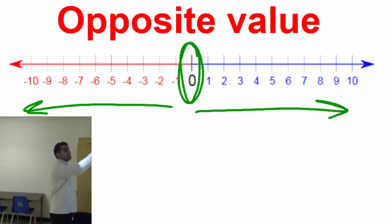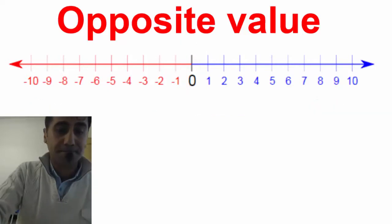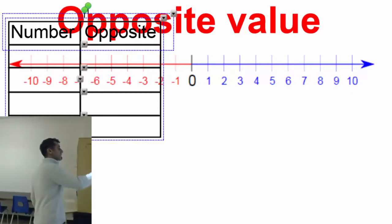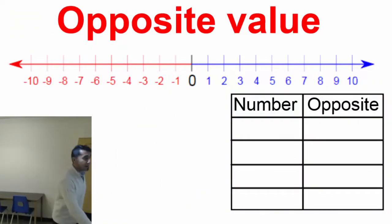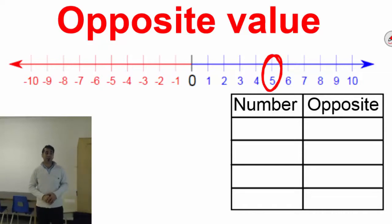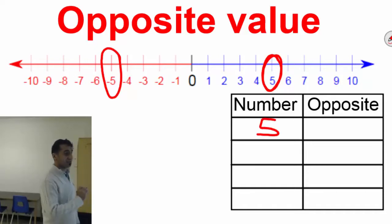Now, let's just make some examples for this. Let me put the table here. Let's just talk about 5. 5 is here. What is the opposite value of number 5? It's on the other side. It's positive on the other side. And exactly the same number. So it will be negative 5. So, number is 5. Opposite value of number 5 is negative 5.